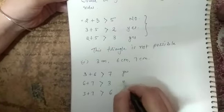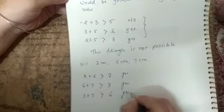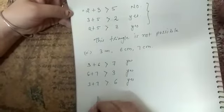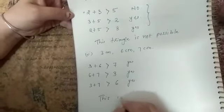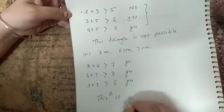So here the property is satisfied. We can write this triangle is possible.